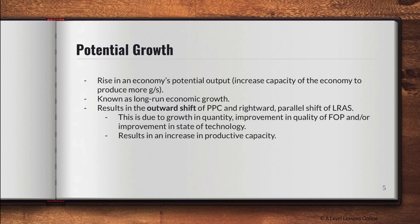Potential growth is the long-run economic growth of an economy — a rise in an economy's potential output. This output has not been achieved yet but potentially will be. It means an increase in the capacity of the economy to produce more goods and services. Investing in technology, investing in more capital — anything that increases potential output will likely cause a rise in potential growth. It results in an outward shift of the PPC, and a parallel shift of the long-run AS curve.